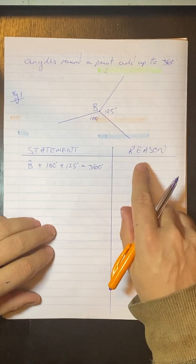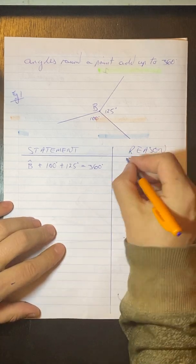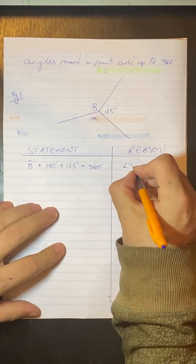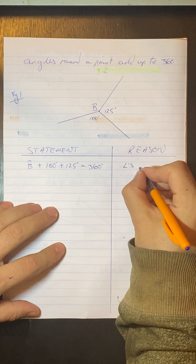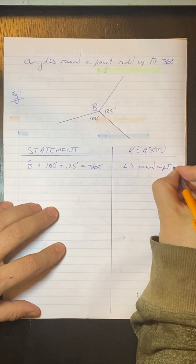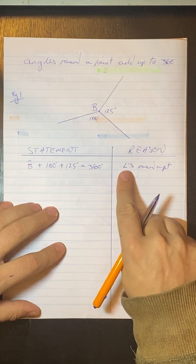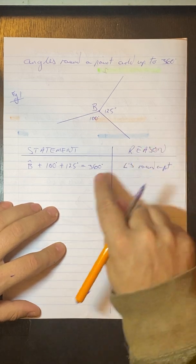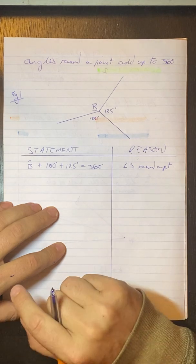Now, I must give a reason why I said that. And my reason for that is angles around a point. And you remember that the symbol for angles in geometry is that funny little L like that.